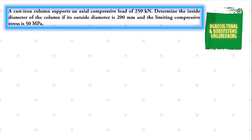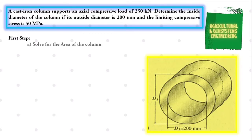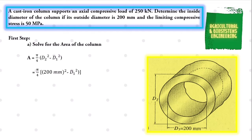We proceed with our solution. The first step is to solve for the area of the column. To solve for the area, we will use the formula: area is equal to pi over 4, multiplied by D2 squared minus D1 squared. Substituting values, area is equal to pi over 4, multiplied by 200 mm squared minus D1 squared, which simplifies to pi over 4, multiplied by 40,000 square millimeters minus D1 squared.